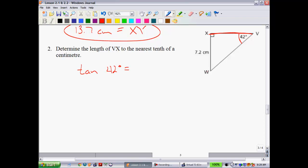Is equal to my opposite side, which is XW, all over my adjacent side. That's this one up here. XV or VX. Maybe I'll call it VX because that's what they did. It doesn't make any difference. Let's substitute in what we know. We know that XW is 7.2.